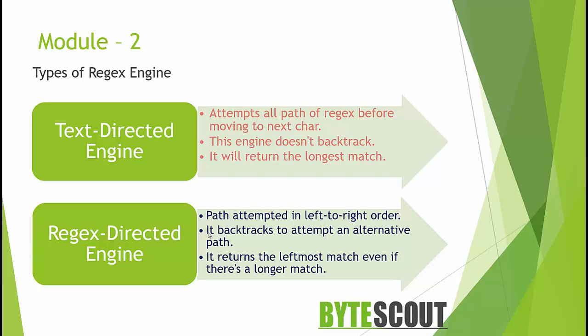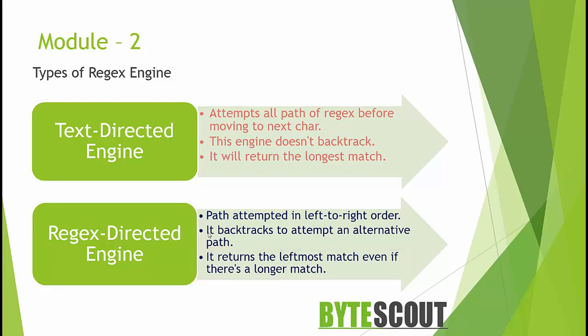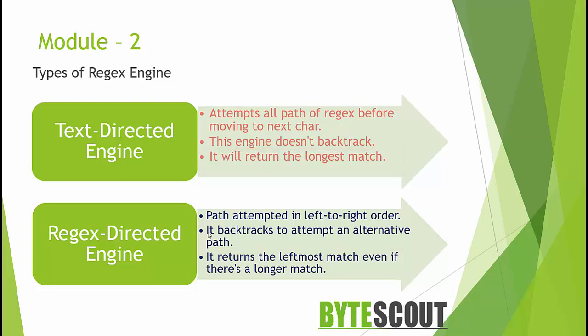The most important difference between a regex-directed engine and a text-directed engine is this: a regex-directed engine will stop at the first possible match it encounters, while a POSIX-based or text-directed engine will try to find the longest match. This does not mean the text-directed engine always returns the longest possible match, just that it will try to make the first match as long as possible, even if a shorter part of the string already gave a match.